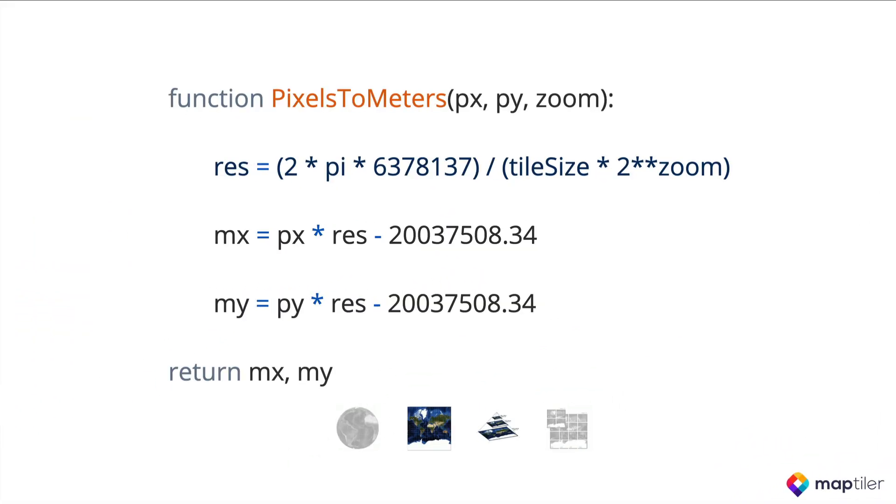Here you can see how to recalculate pixels to metres. Basically you need to know the resolution calculated from the radius of the Earth, the tile size, and the zoom level. Once you have the resolution, then you can multiply this by the pixel values, and subtract half the circumference of the Earth, to get the pixel values in metres.